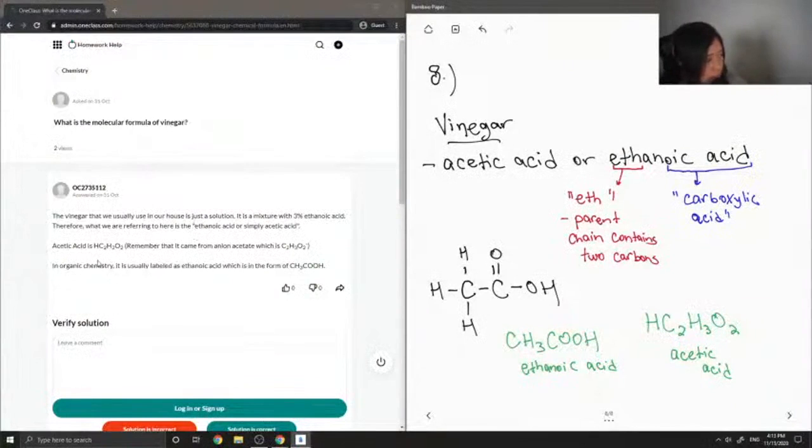Acetic acid is HC2H3O2, and remember that it came from an anion acetate, which is C2H3O2. In organic chemistry, it is usually labeled as ethanoic acid, which is in the form of CH3COOH.